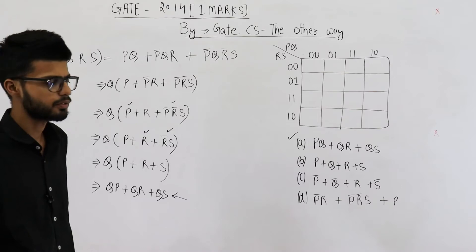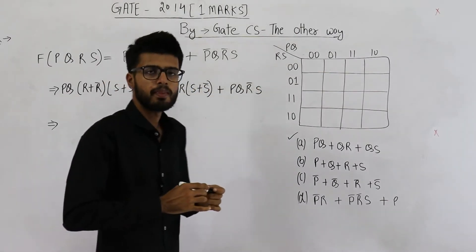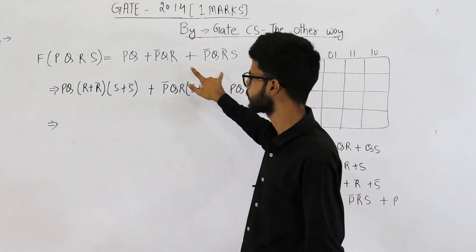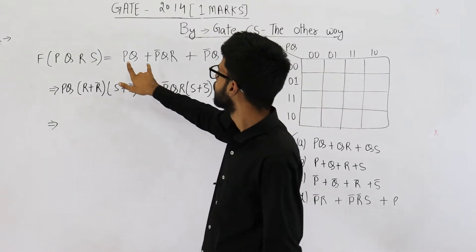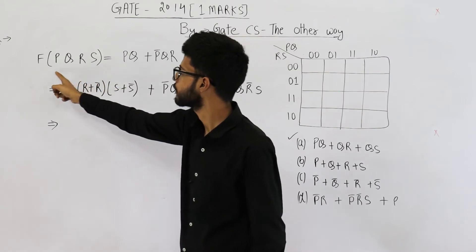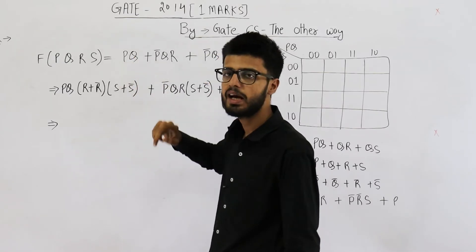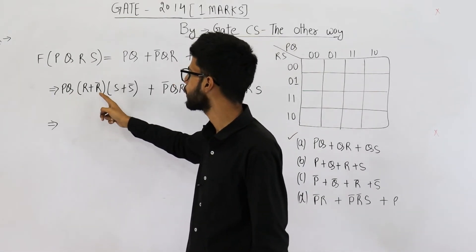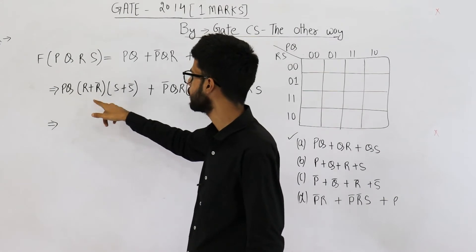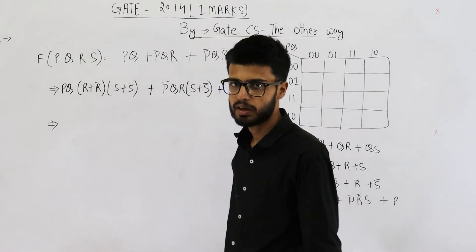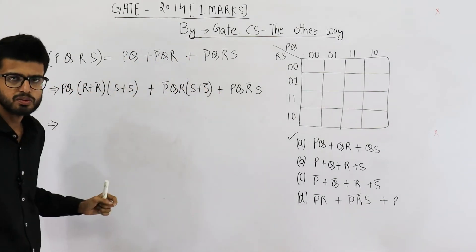I'll also show the same solution using K-map. Whenever you want the canonical SOP, first let's find the canonical SOP from here, then we will minimize it using K-map. The standard method is to make all terms contain four variables. Here the function depends on four variables, so let's include all four variables in every term. For the term PQ, R and S are missing. So what I've done is multiply PQ by (R + R-bar) and (S + S-bar), which equals one and one. So this expression is equivalent to PQ only.